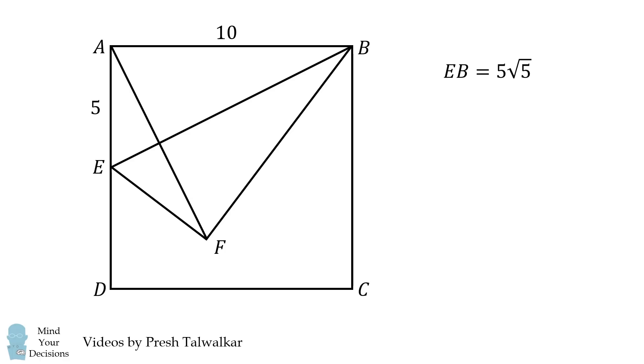Construct AF. Let its intersection with the line EB be the point G. Since E is equidistant from the points A and F, and B is equidistant from the points A and F, EB is the perpendicular bisector of AF. Consequently, these line segments are perpendicular.